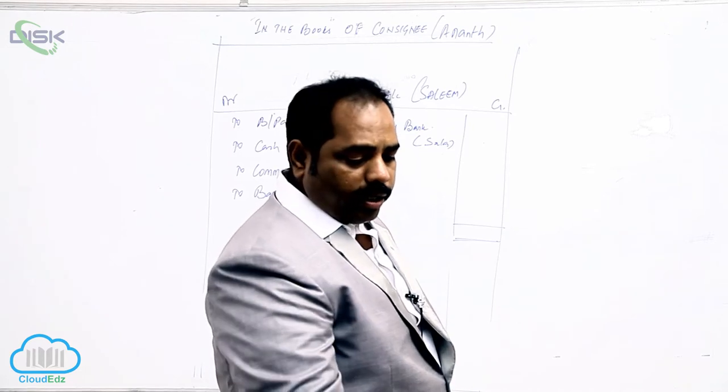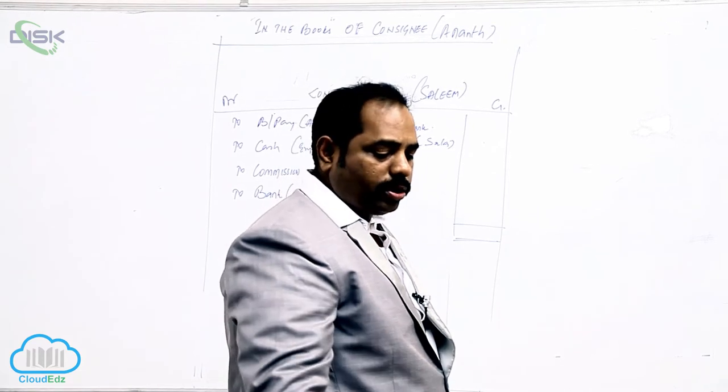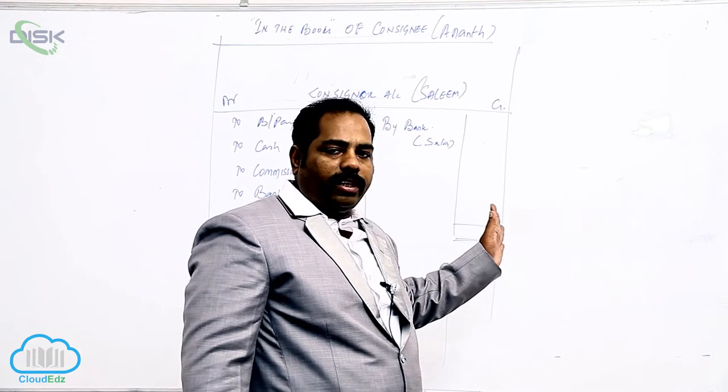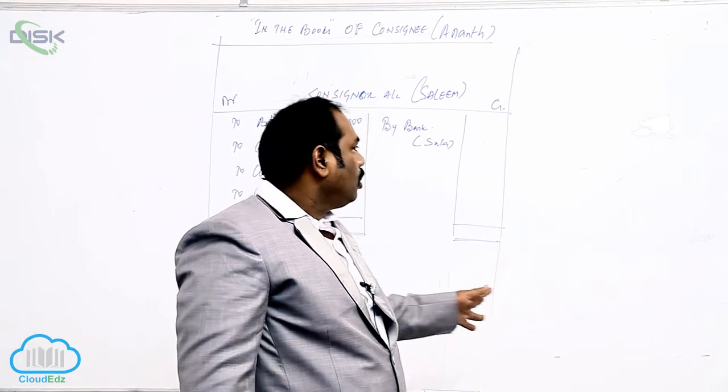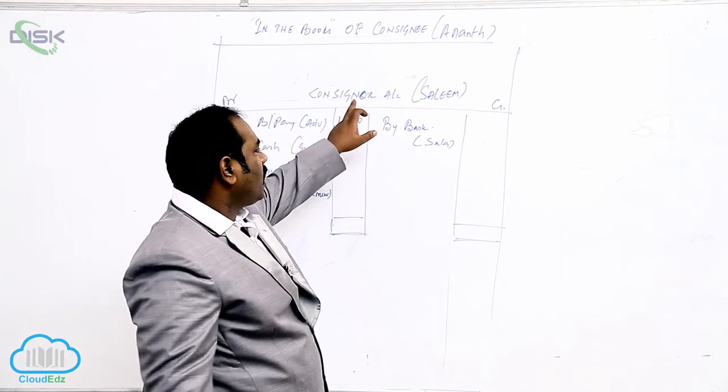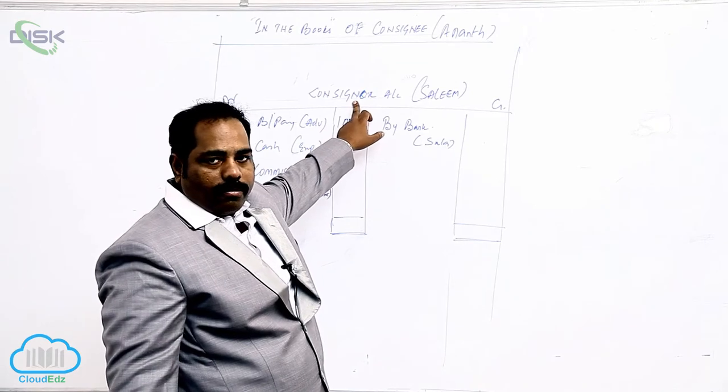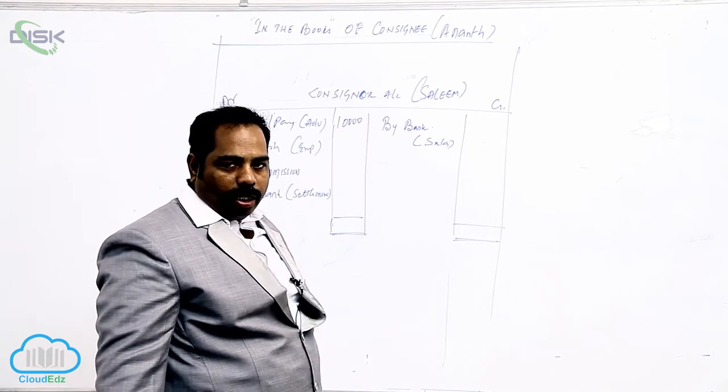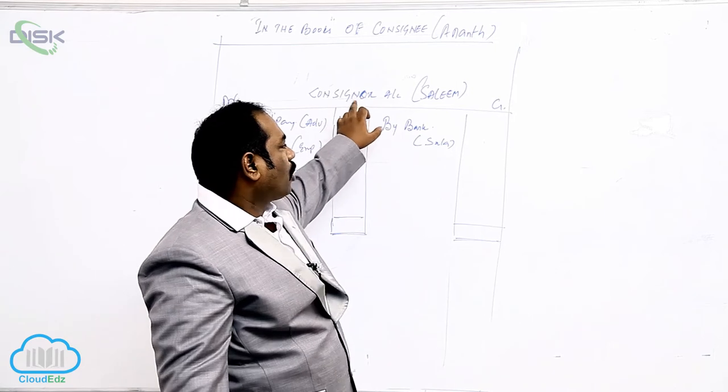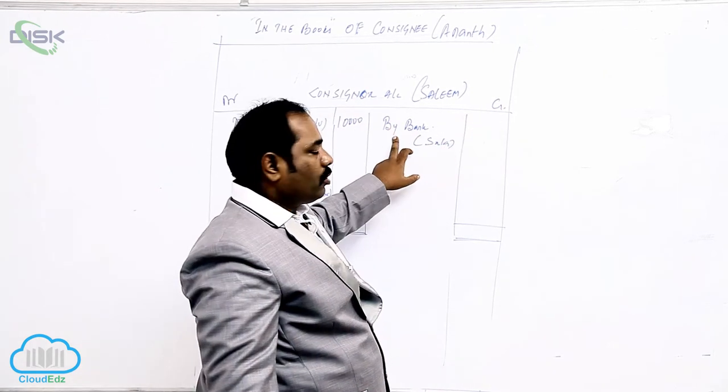Anant sent an account stating that the entire stock was sold for 28,000. When Anant is selling the goods for 28,000, so for sales consignee becomes a creditor to us. Because after selling the goods, the consignee has to pay to consigner. So consigner is a creditor.